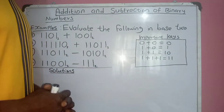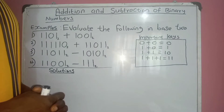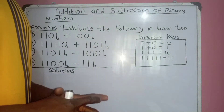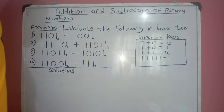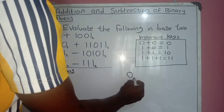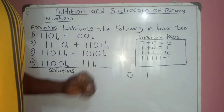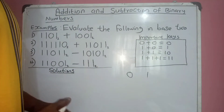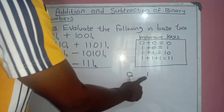Binary numbers are numbers in base 2. Base 2 numbers are made up of two digits. You cannot have 2 in base 2, so the highest digit you can find in base 2 is 1.